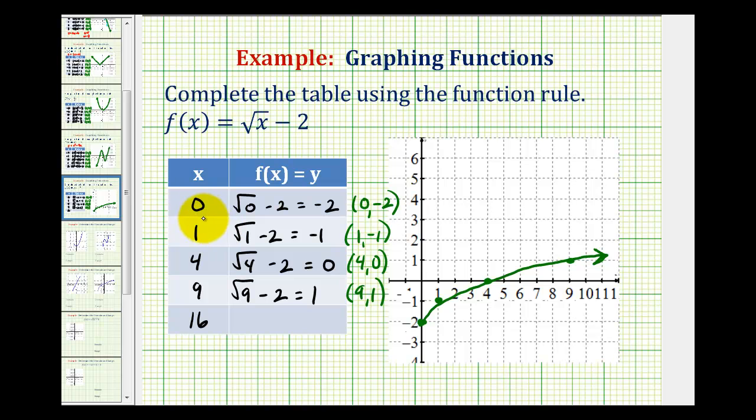Again, we know x cannot be less than zero because we'd have a negative number underneath the square root. Another way to say this is the domain of the function, or the set of all possible x values, would be x greater than or equal to zero. Or using interval notation, we can express this as the interval from zero to infinity, where it's closed on zero, meaning it includes the value of x equals zero.